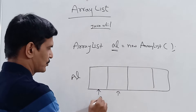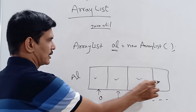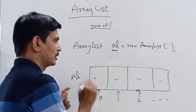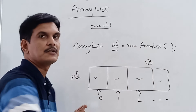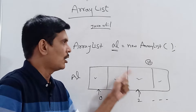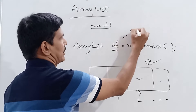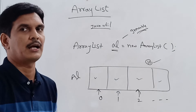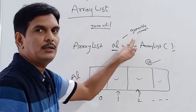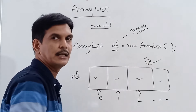Every location is identified using an index starting from zero. By default, when you create an ArrayList, 10 locations are allocated. As elements are added or removed, the size automatically grows — that's why ArrayList is called a growable object. All collections have this growable nature at runtime; as many objects as you add, the size keeps increasing.